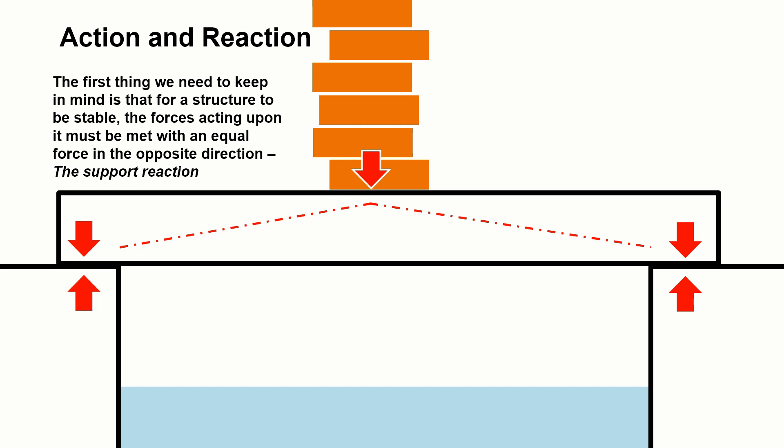For a weight sitting onto a bridge, as we've got here, the load of those bricks will pass into the structure of the bridge, which will then be passed into the ground at either side. That is the first action. The reaction is the support reaction at either end, where it touches the ground, where effectively the ground is pushing back up into the building or the bridge.